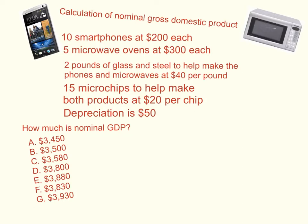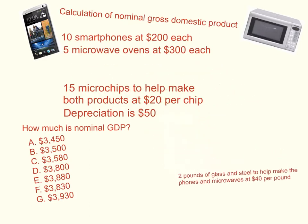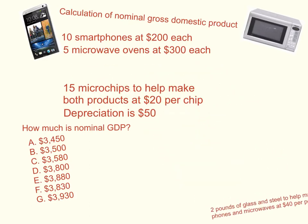First of all we see smartphones — these are final products, so we are going to include them in the calculation of GDP. Microwave ovens are also final products, so we will include them. Now what about the glass and the steel? They're intermediate products, and according to the definition of GDP, we do not include them. So we will put them aside and not use them in the calculation of GDP.